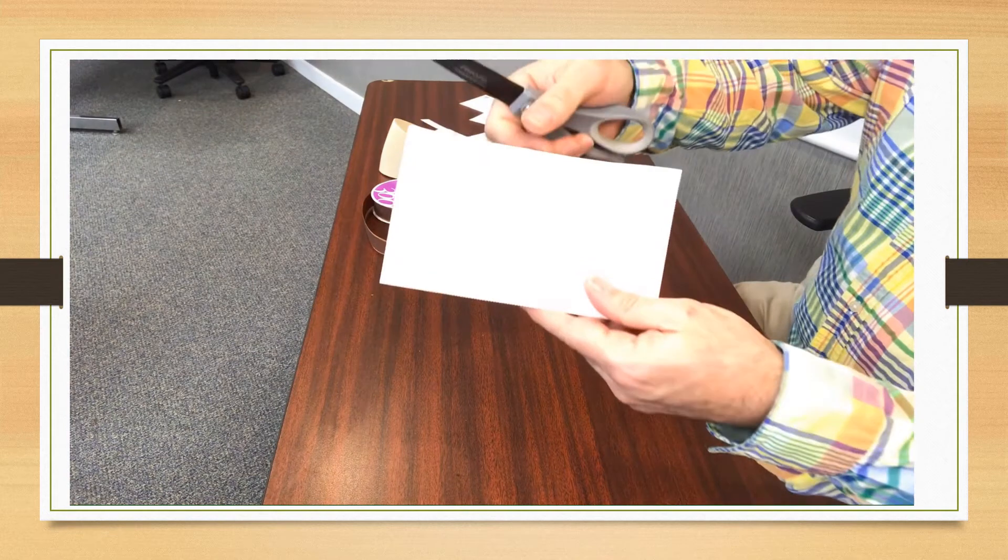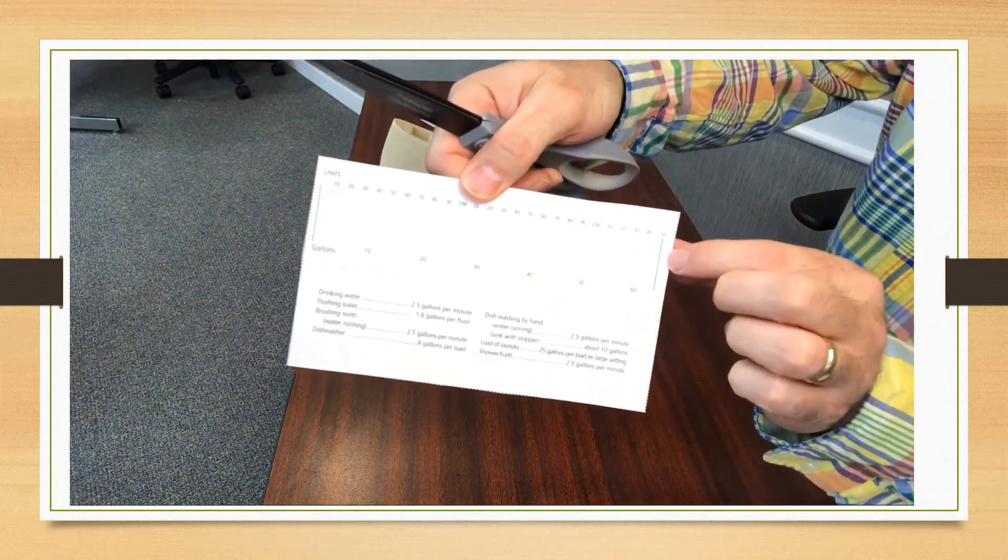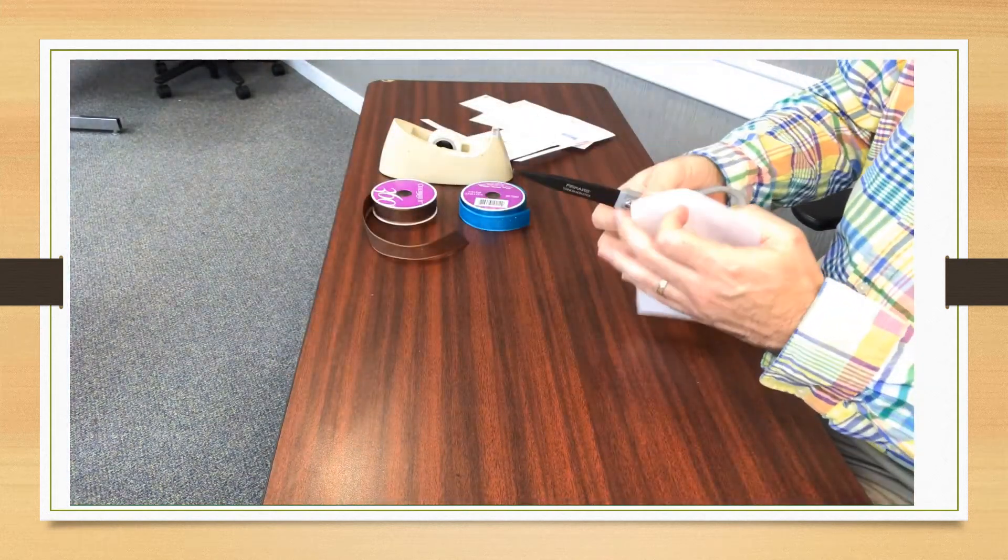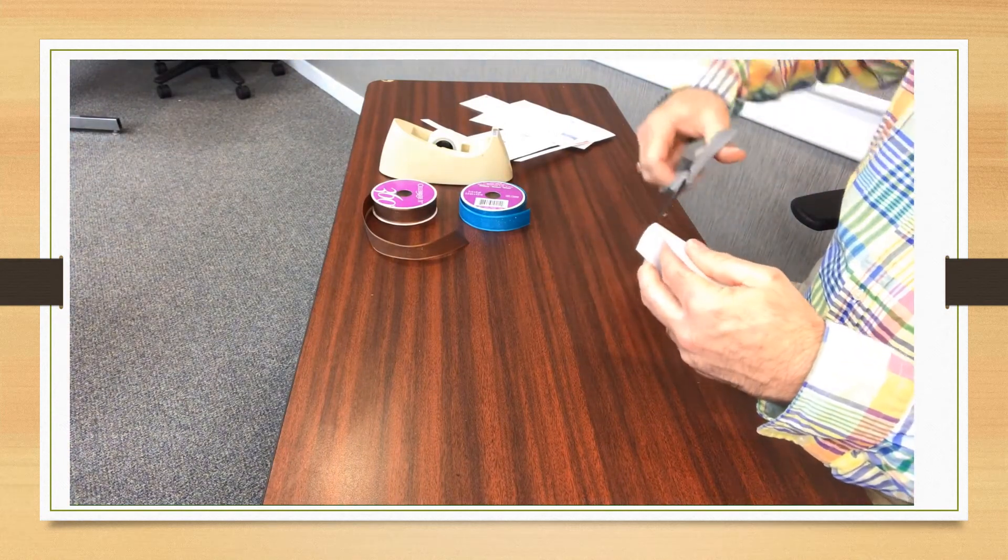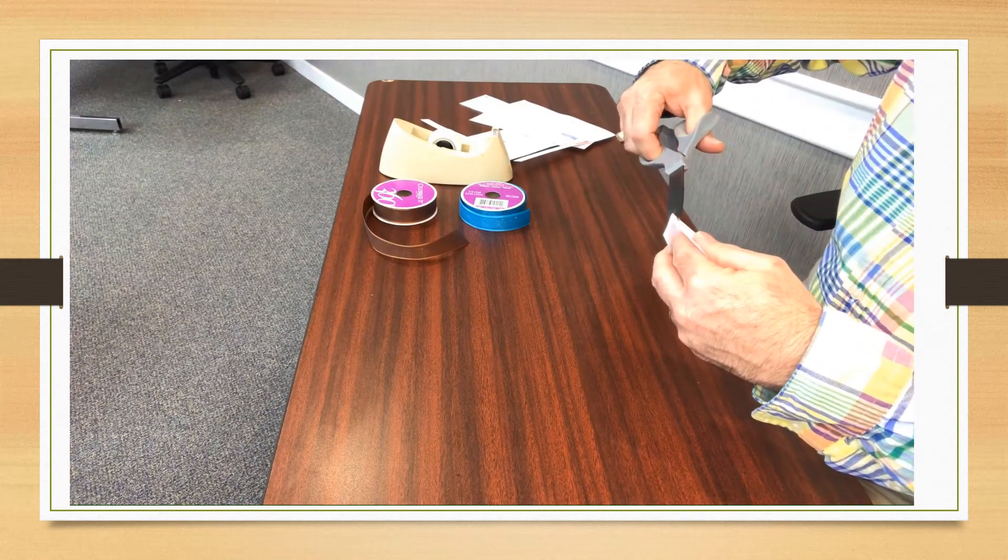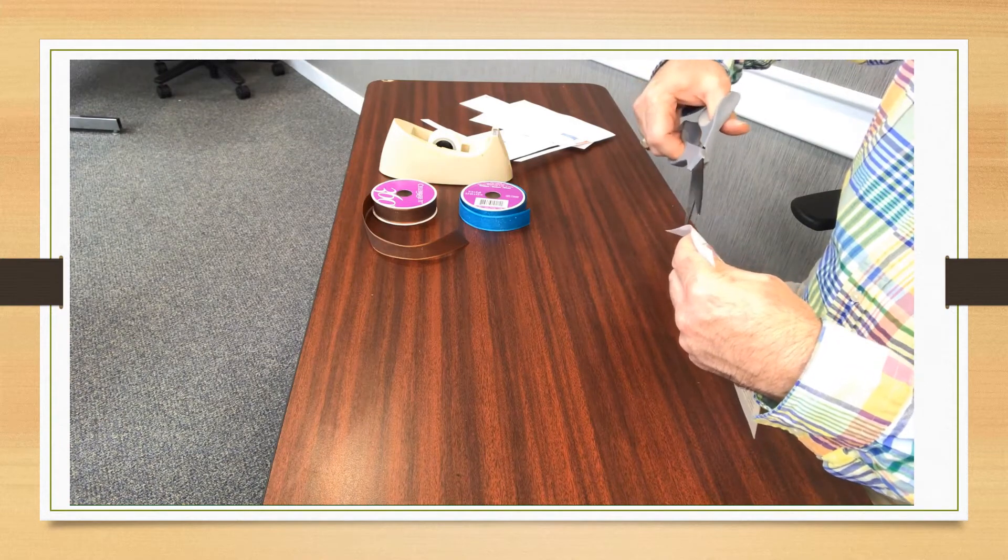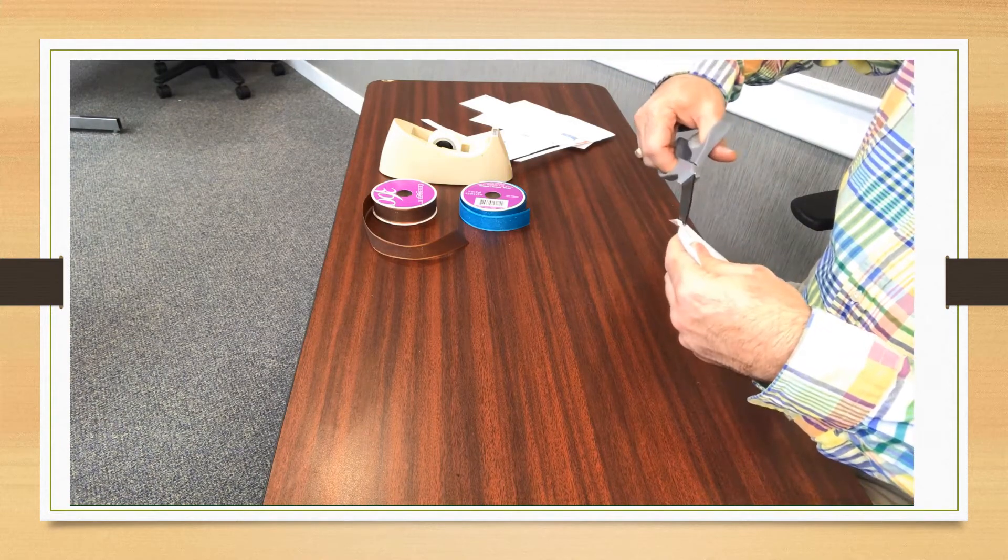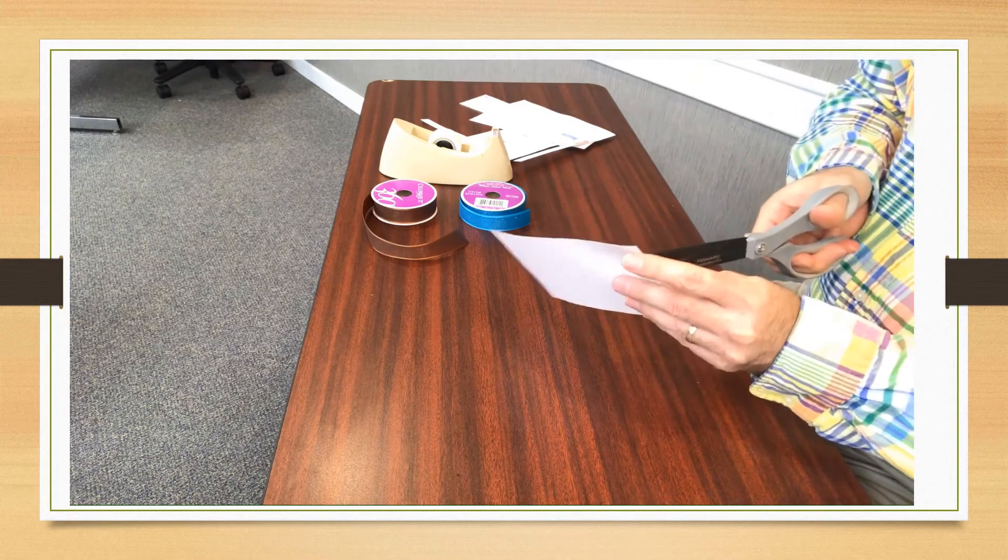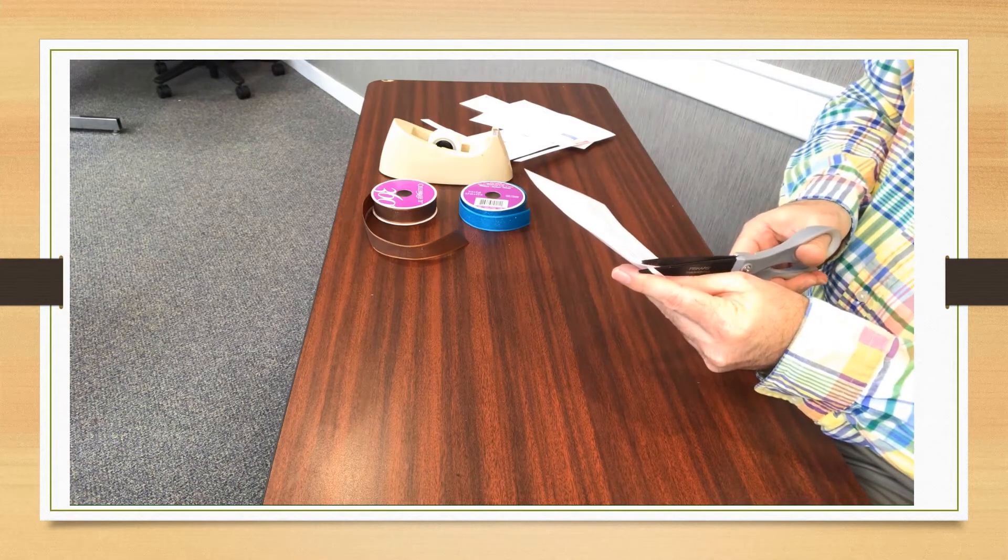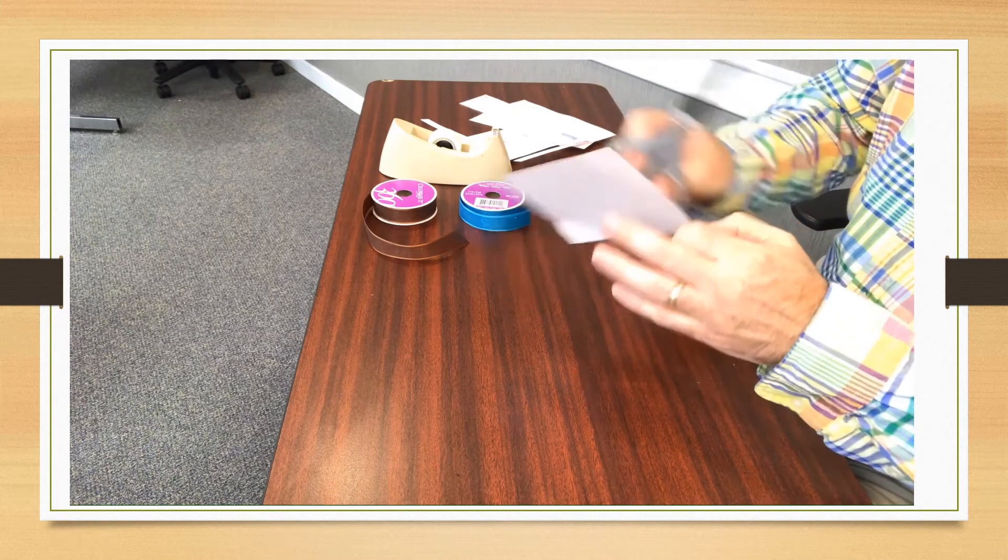Next we're going to cut out these two slots, one on either end. To make it easier to cut we're going to just put a gentle fold in the paper and make a cut on the fold and then finish cutting it open. Repeat on the other side.